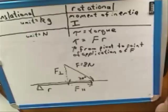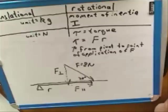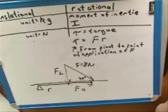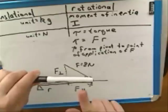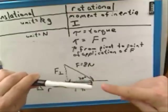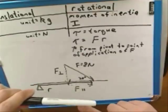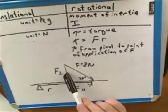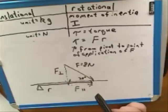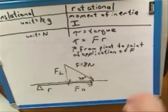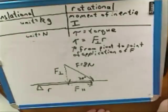Which of these two components is causing rotation — perpendicular or parallel? The perpendicular component. That's the idea we discussed before: pushing perpendicular to the pen causes rotation, but pushing parallel does not. In this more difficult case where we're pushing at a diagonal, only the component of the push that's perpendicular actually causes rotation; the parallel component does not. So we have to improve our formula for torque: instead of torque equals F times R, we say torque equals F-perpendicular times R.